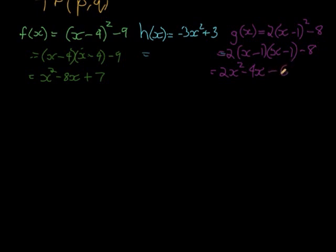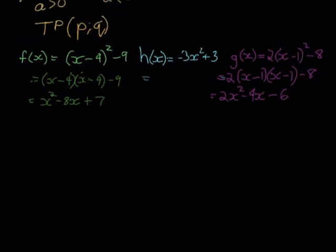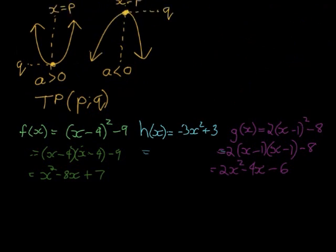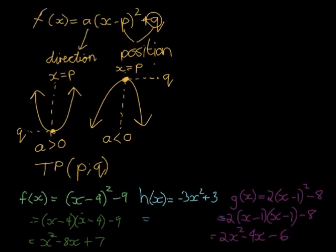Okay, now you might notice that these ones are in a different form. So we get two forms. This one can also be written as ax squared plus bx plus c.